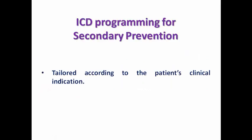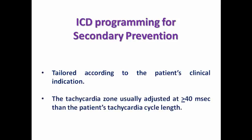When programming an ICD for secondary prevention, it is tailored according to the patient's clinical indication. The tachycardia zone at which the ICD starts its therapies — usually via ATP, standing for anti-tachycardia pacing — is adjusted at more than or equal to 40 milliseconds above the patient's tachycardia cycle length. We calculate the cycle length from the patient's clinical VT and then add 40 milliseconds, and this defines the start of the ICD targeted therapies.